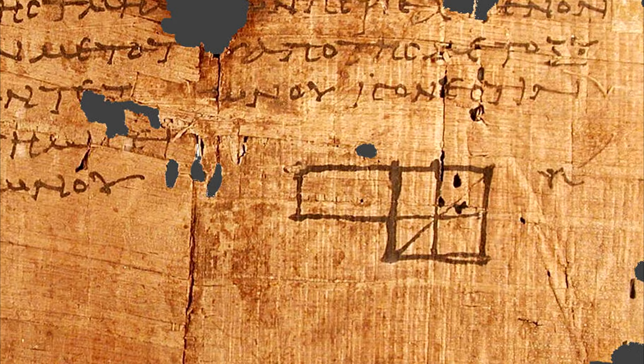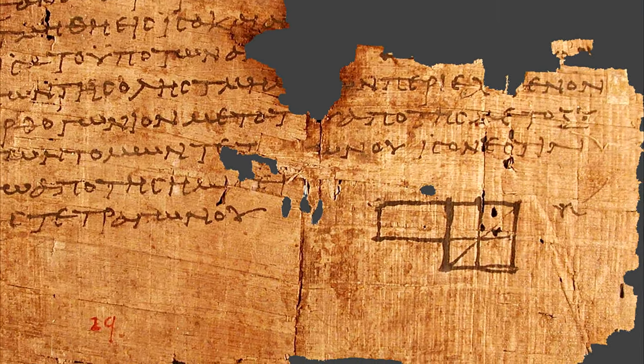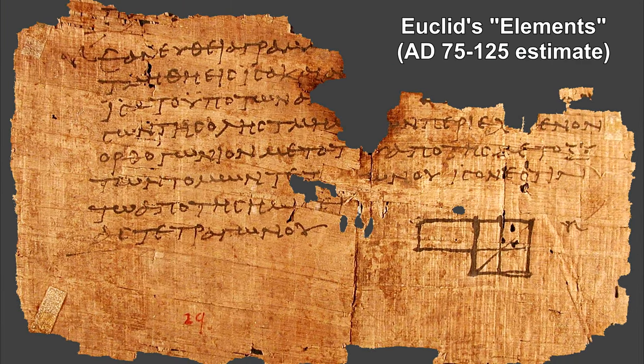Euclid lived in the Greek city of Alexandria in Egypt around 2,300 years ago. He spent his life studying and teaching geometry. He published his ideas in a book called Elements. To this day, it is the foundation for our understanding of geometry and mathematical processes in general.